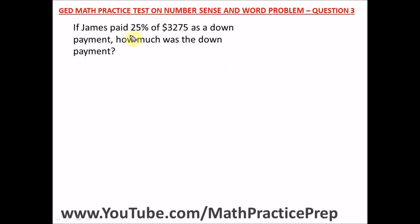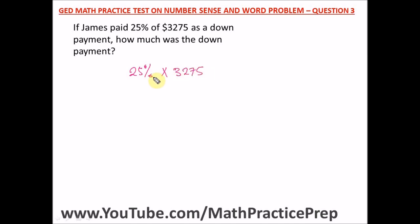Question three: If James paid 25% of three thousand two hundred and seventy-five dollars as a down payment, how much was the down payment? Interpreting this, '25% of' means multiplication — we multiply 25% by $3,275.